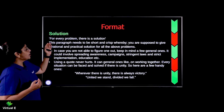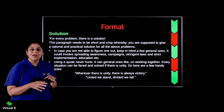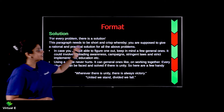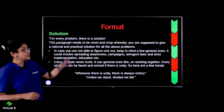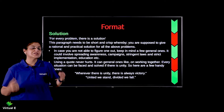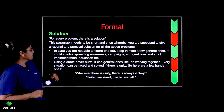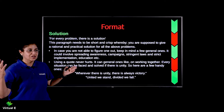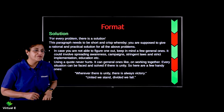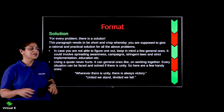For every problem there is a solution — we all very well know that. This paragraph needs to be short and crisp, whereby you are supposed to give a rational and practical solution for all the above problems. In the previous paragraph you quoted all the problems; here you will give a short and crisp solution to every problem. They need to be practical solutions, not something fictional. In case you are not able to figure one out, keep in mind a few general ones — it could involve spreading awareness, campaigns, stringent laws and strict implementation, education, etc.